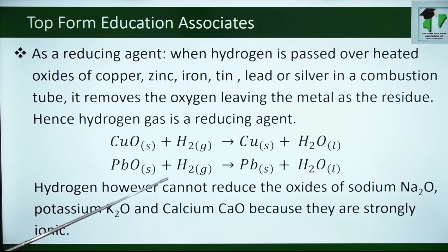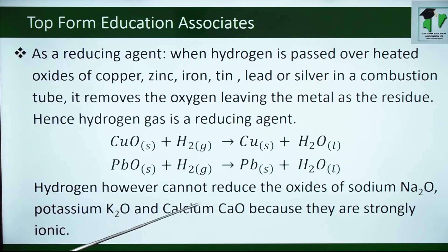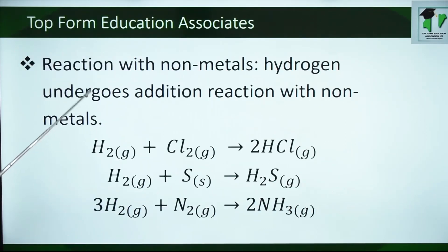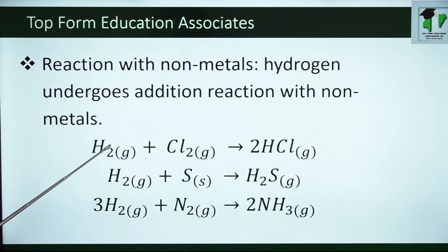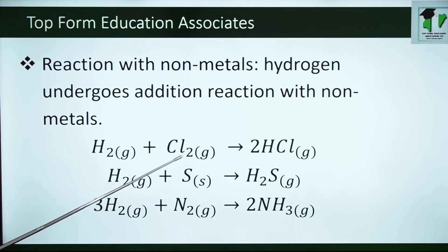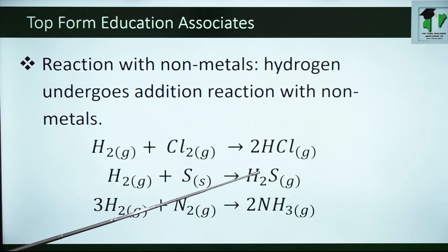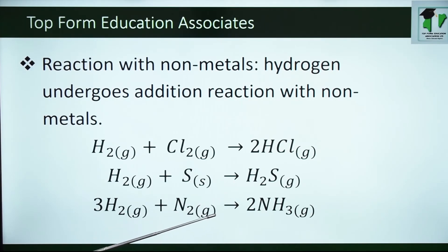Hydrogen, however, cannot reduce the oxides of sodium, potassium and calcium because they are strongly ionic. The metals in these oxides belong to Group 1 and Group 2 and they are very strong electropositive elements. Hydrogen can also react with non-metals. For instance, it can add itself to chlorine to form hydrogen chloride gas, to sulfur to form hydrogen sulfide, and to nitrogen to form ammonia gas.